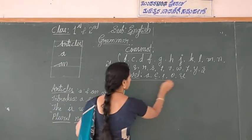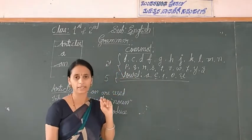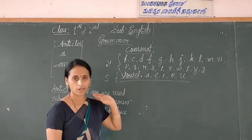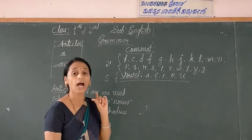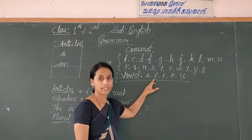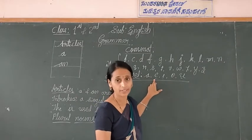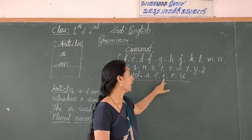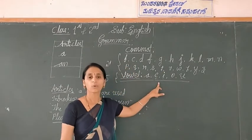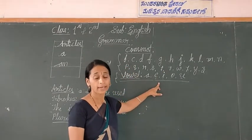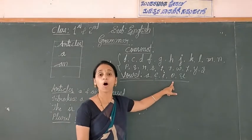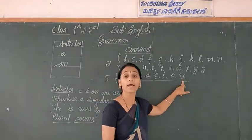When a word starts with a vowel letter - A, E, I, O, U - we have to use 'an'. For example: an apple, an elephant, an ice cream, an orange, an umbrella.